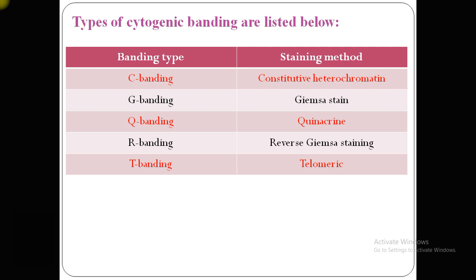The centromere is where the two copies of the chromosome attach to each other when the cell is getting ready to divide. R-banding is the reverse of Giemsa staining and is completely opposite to G-banding — R-banding stains the non-centromere region. T-banding mainly stains the telomere region of the chromosome.